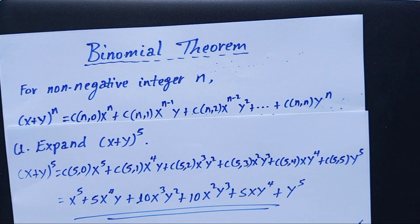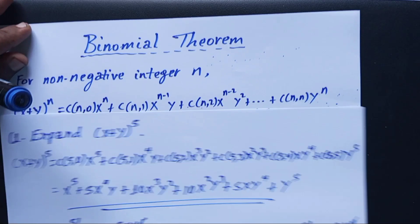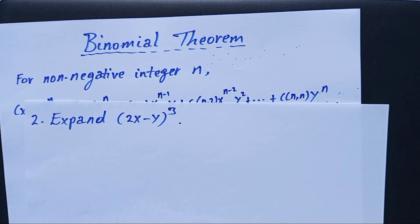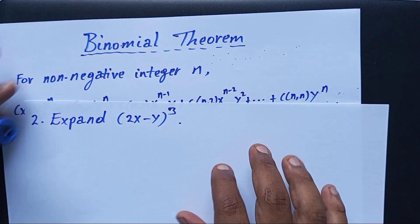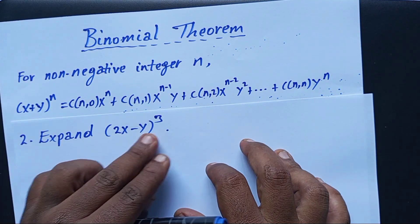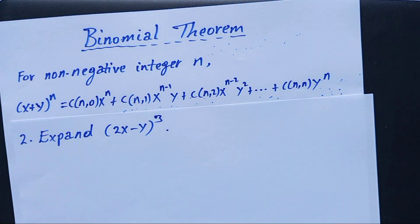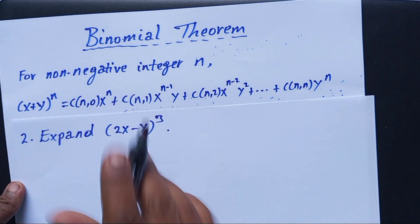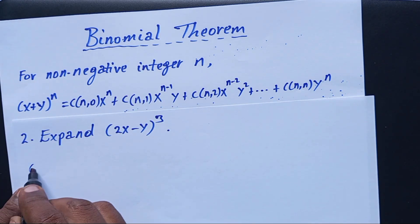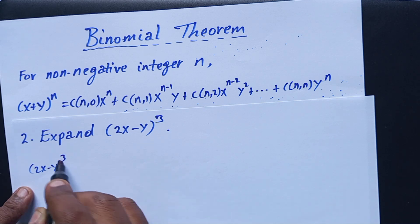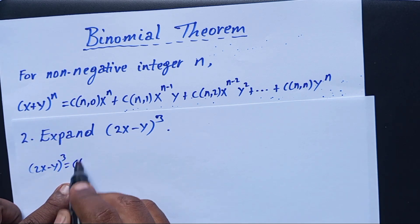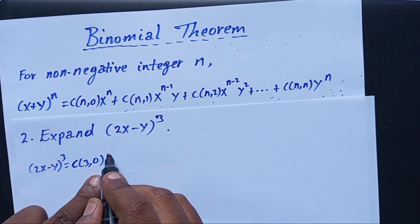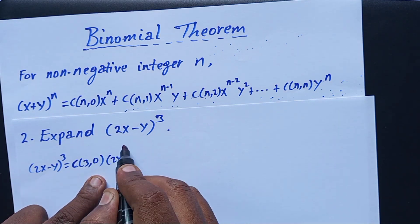That is the expansion using Binomial Theorem. Let us see another example. Expand (2x - y)^3. Using the Binomial Theorem, (2x - y)^3 equals C(3,0)(2x)^3 plus the subsequent terms.